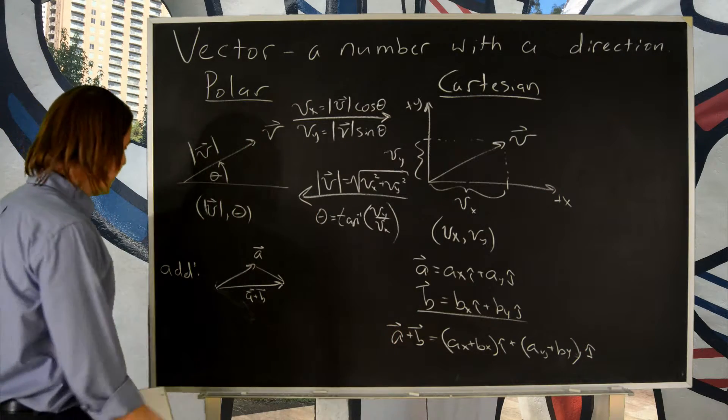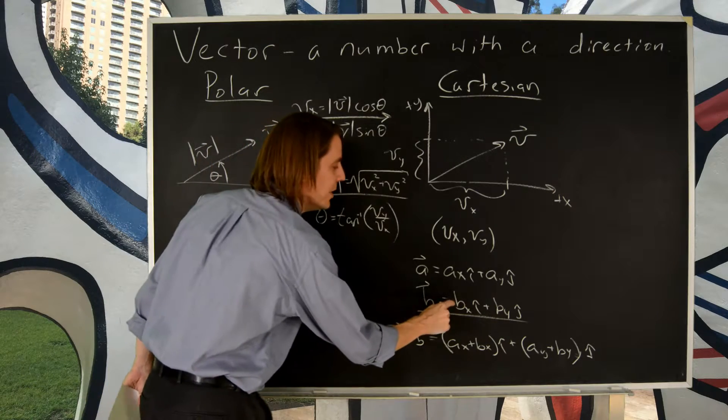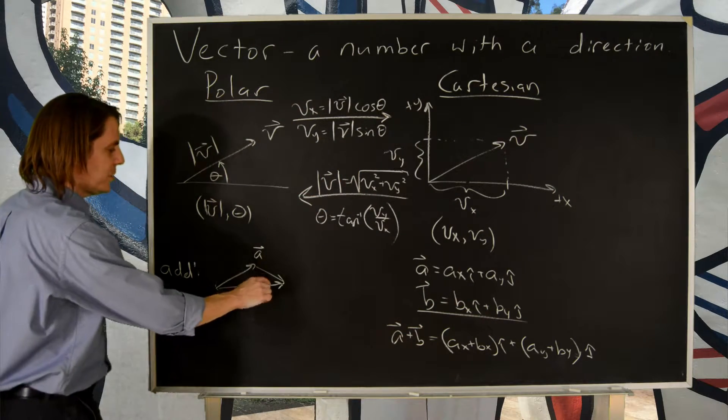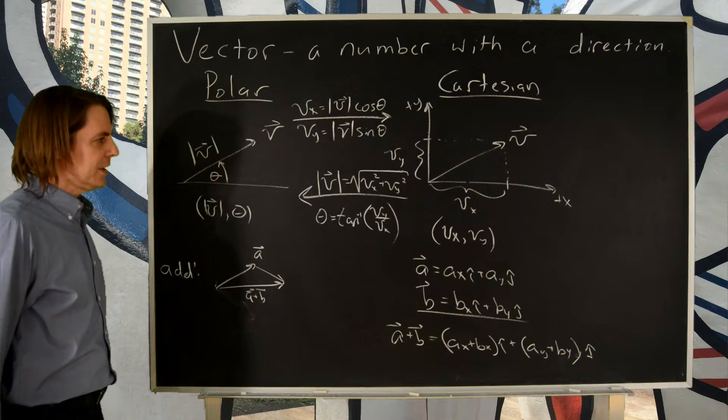If you want to subtract, you just add the negative. To make this one negative, you put a negative sign there and a negative sign there. You multiply it by negative one. If you want to make this one negative, you flip its direction. And that's how you make a negative.